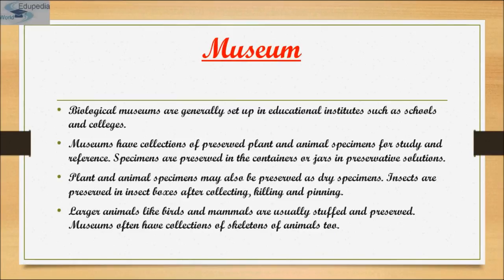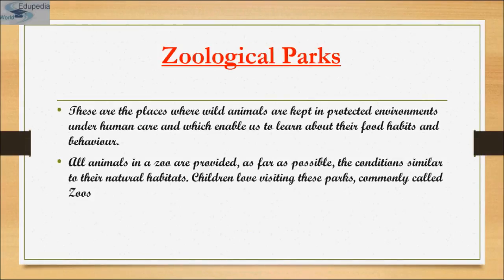The next taxonomical aid is the biological museum. Biological museums are generally set up in educational institutes such as schools and colleges. They are collections of plant and animal species preserved for study and reference. In museums, specimens are preserved in containers and jars containing preservatory chemical solutions such as formalin, which is a 40% formaldehyde solution. Insects are preserved in insect boxes, whereas larger animals like birds are usually stuffed and preserved.